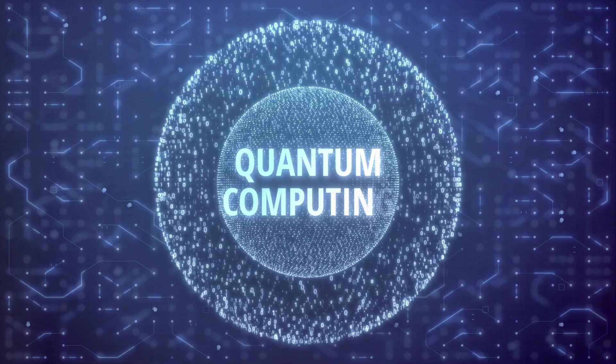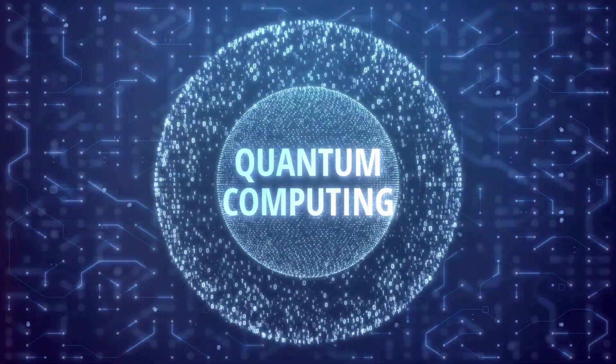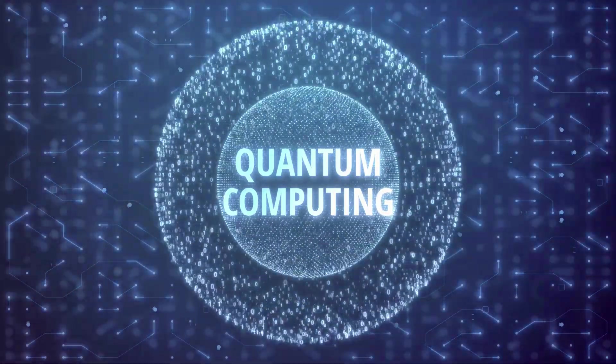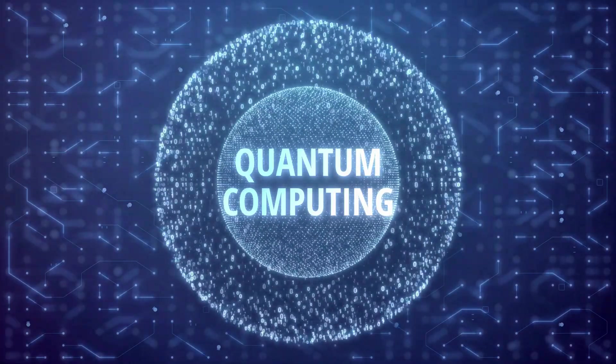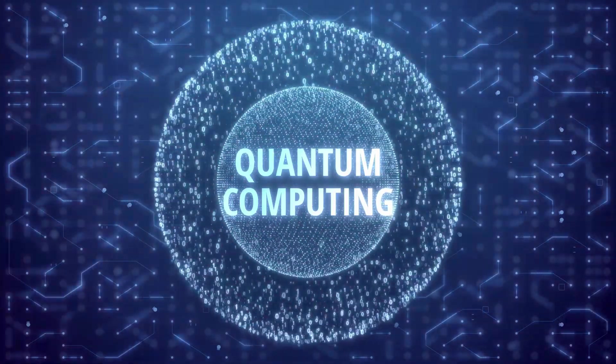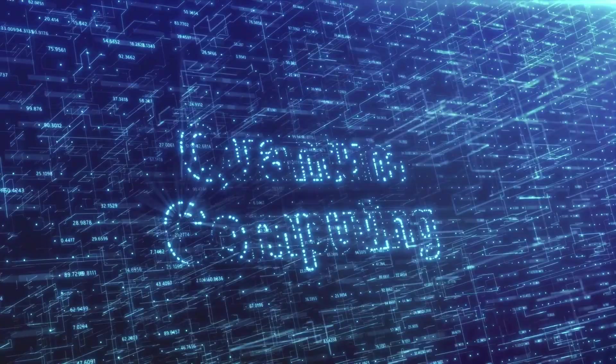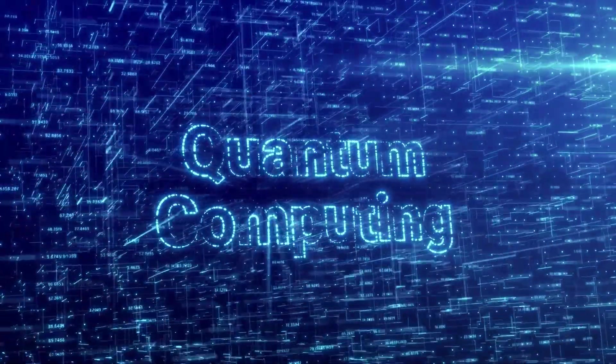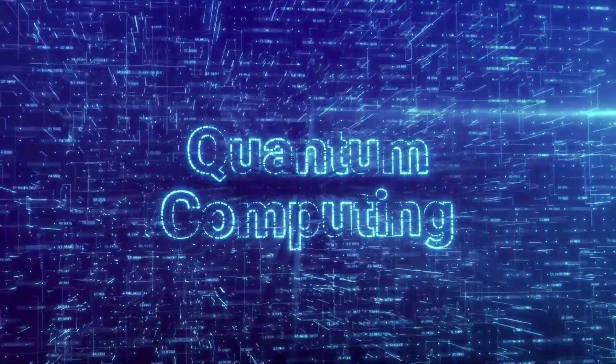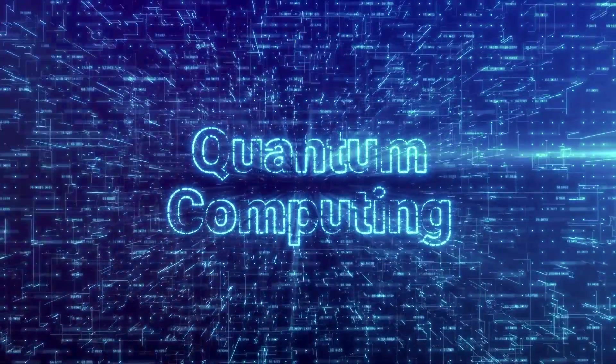Let's start with quantum computing. Today's computers use bits to process information, but a quantum computer would use quantum bits, or qubits. These qubits can be in multiple states at once, thanks to a property called superposition. This means they can process vast amounts of information simultaneously, making them far more powerful than any computer we have today.